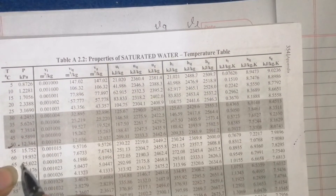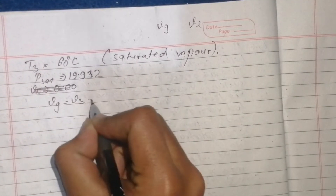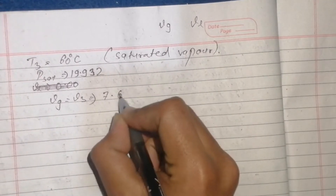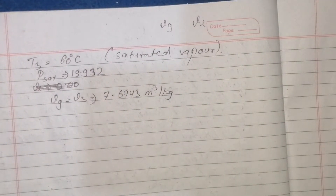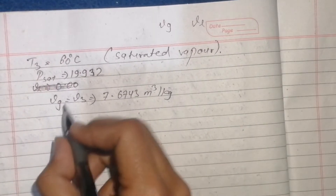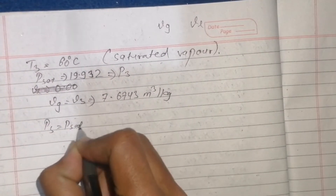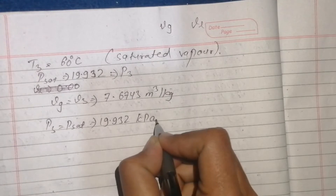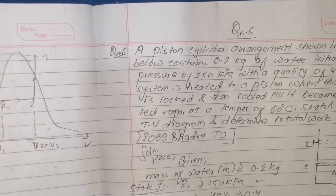From the temperature table at 60 degrees Celsius, vg is 7.6743 m³/kg.